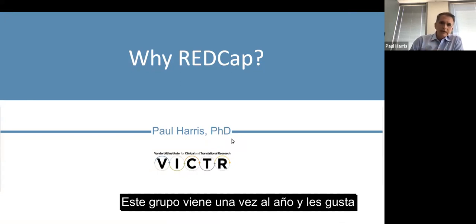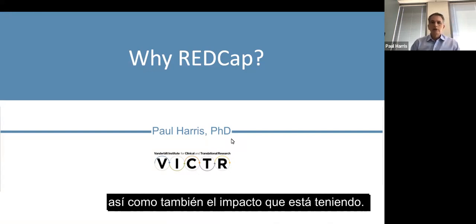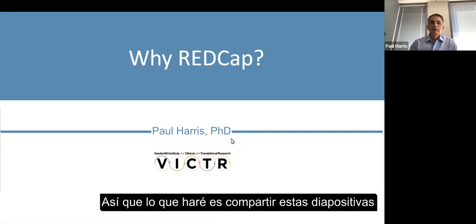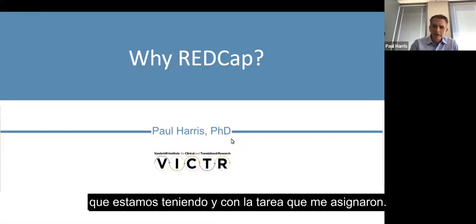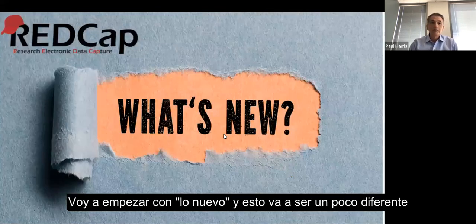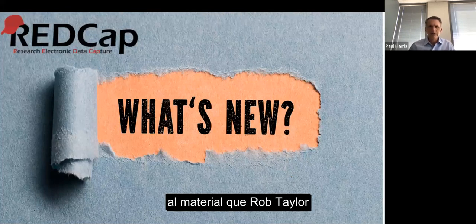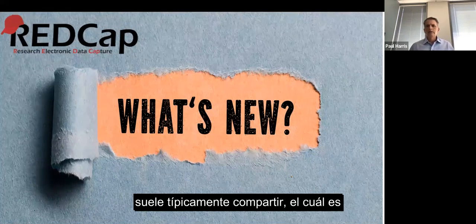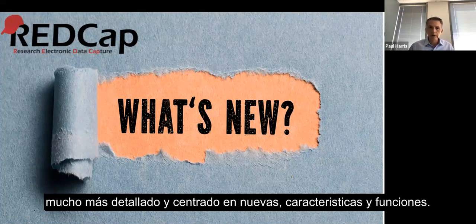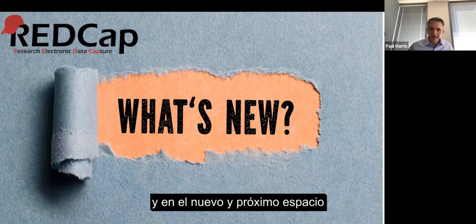This group comes in once a year, and they like to hear about progress — not just what we're doing, but the why we're doing it and the impact that it's having. So I'll share from these slides, because I think it fits well with this meeting and the assignment that I was given. I'm going to start with what's new and what's next — a little different than the material Rob Taylor typically shares, which is much more detailed and focused on new features and functions. I'm going to talk about larger program objectives.